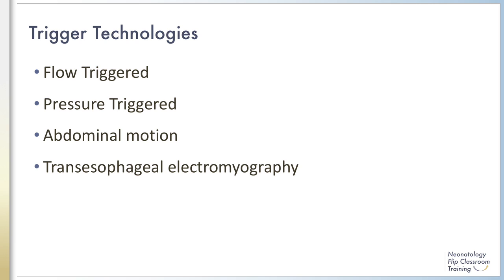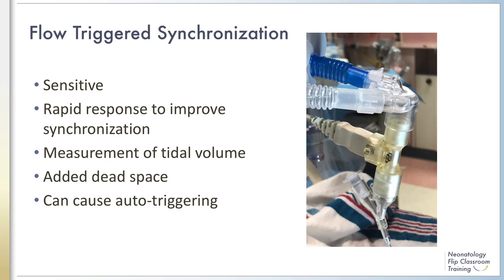Abdominal motion triggering also does not measure tidal volume, can be affected by patient position, and is not widely available. Transesophageal electromyography is a newer technology in which a sensor placed in the esophagus detects electrical activity of the diaphragm and triggers a breath. This modality is referred to as Neurally Adjusted Ventilatory Assist, or NAVA, and can be used invasively or non-invasively.